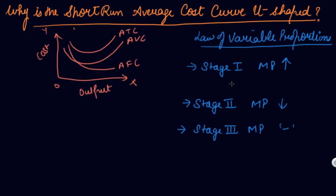The law of variable proportions explains that when you attach variable factors to fixed factors, if marginal product is increasing, you are getting more additional output. Since you need to pay your variable cost for those variable factors, an increasing marginal product means you will bear lesser and lesser cost. At the point where total product starts increasing at a diminishing rate, you get a decreasing marginal product — explained fully in the law of variable proportions video.